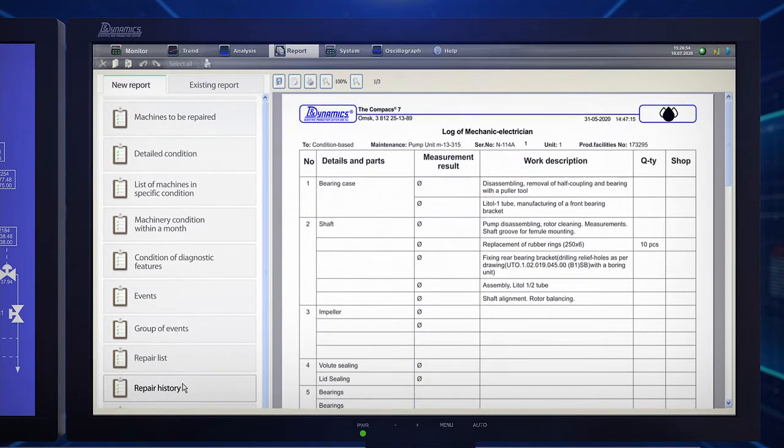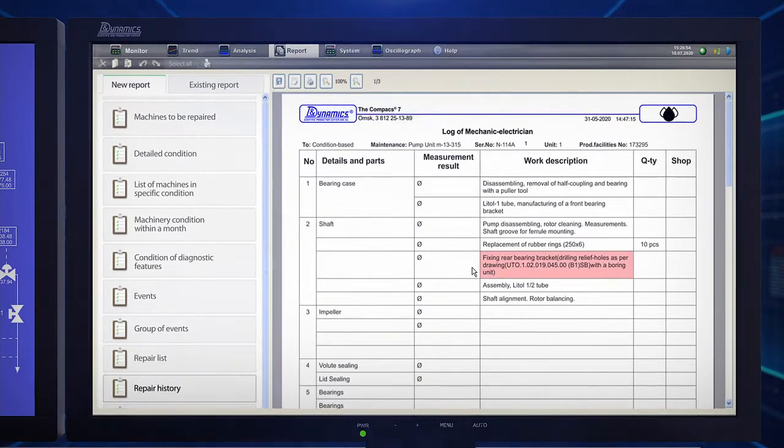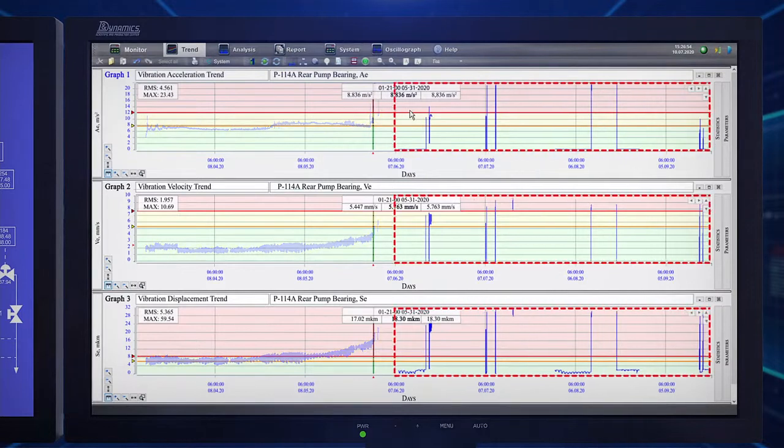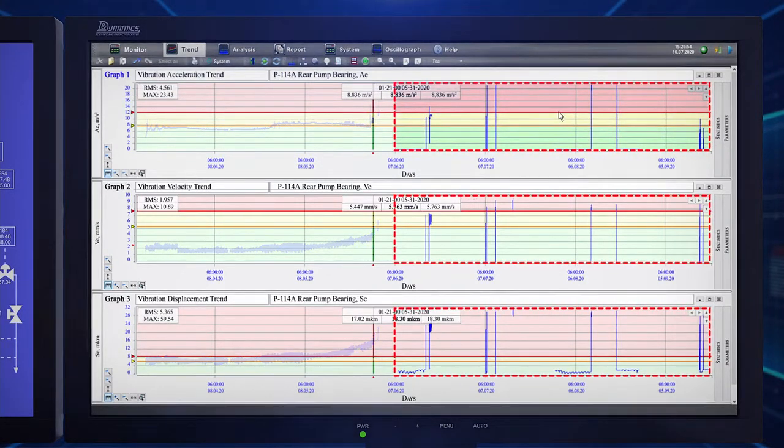During the past maintenance, the bearing brackets were fixed and the rotary gear was balanced and cleaned up. The staff made a few attempts to start the machine. However, the system kept signaling about the unacceptable condition of the machine.